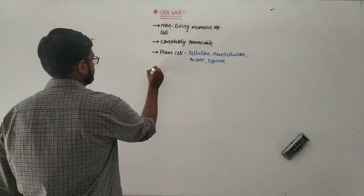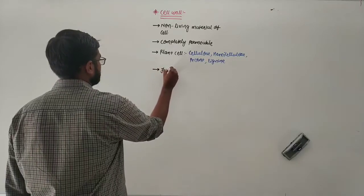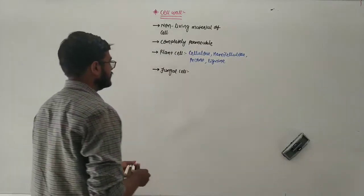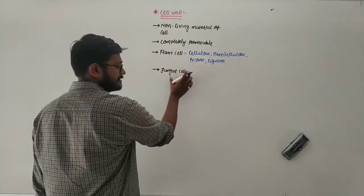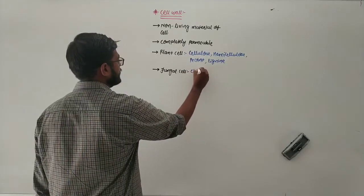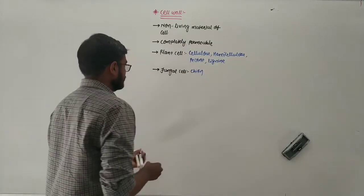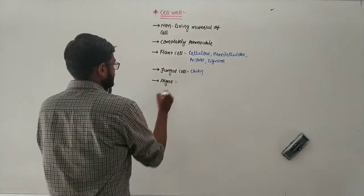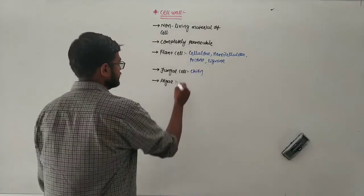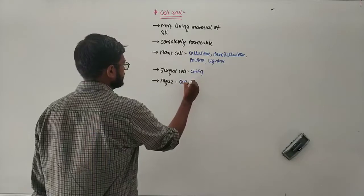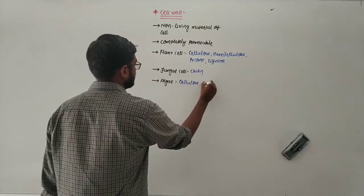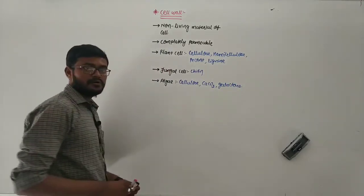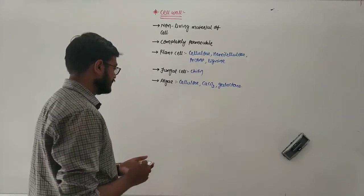Next, in the case of a fungal cell, the cell wall is made up of chitin, which is a polysaccharide. The algae also have a cell wall, which contains specialized components like cellulose, calcium carbonate, and galactans.